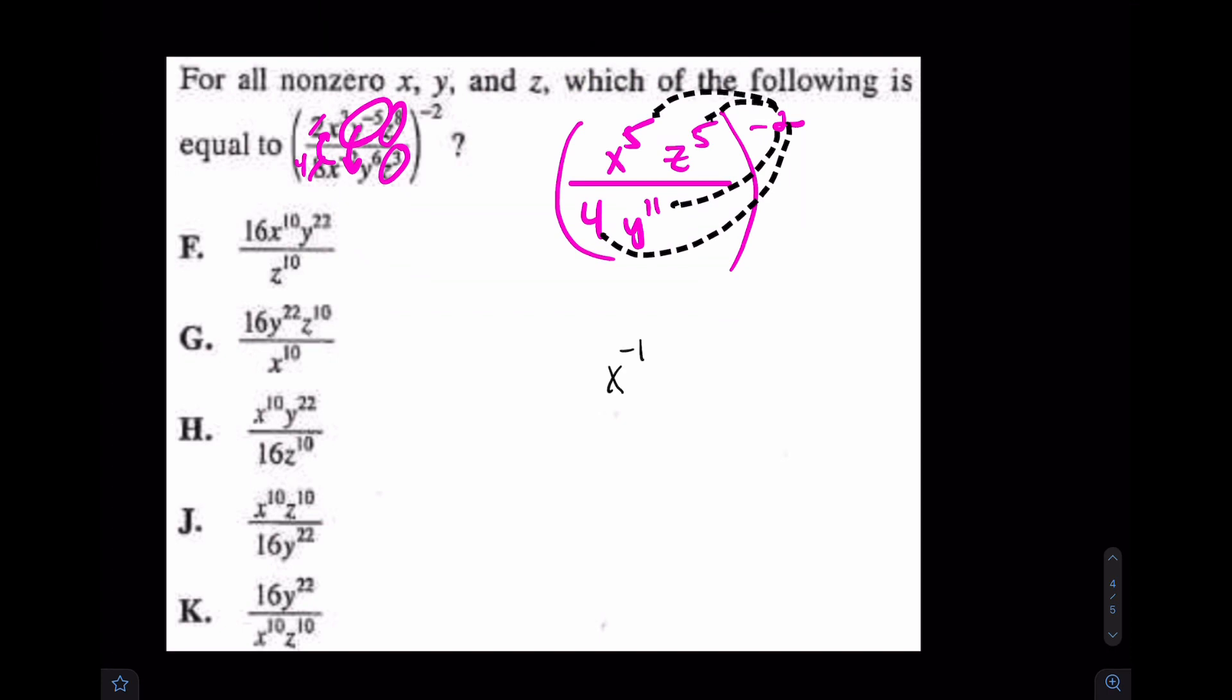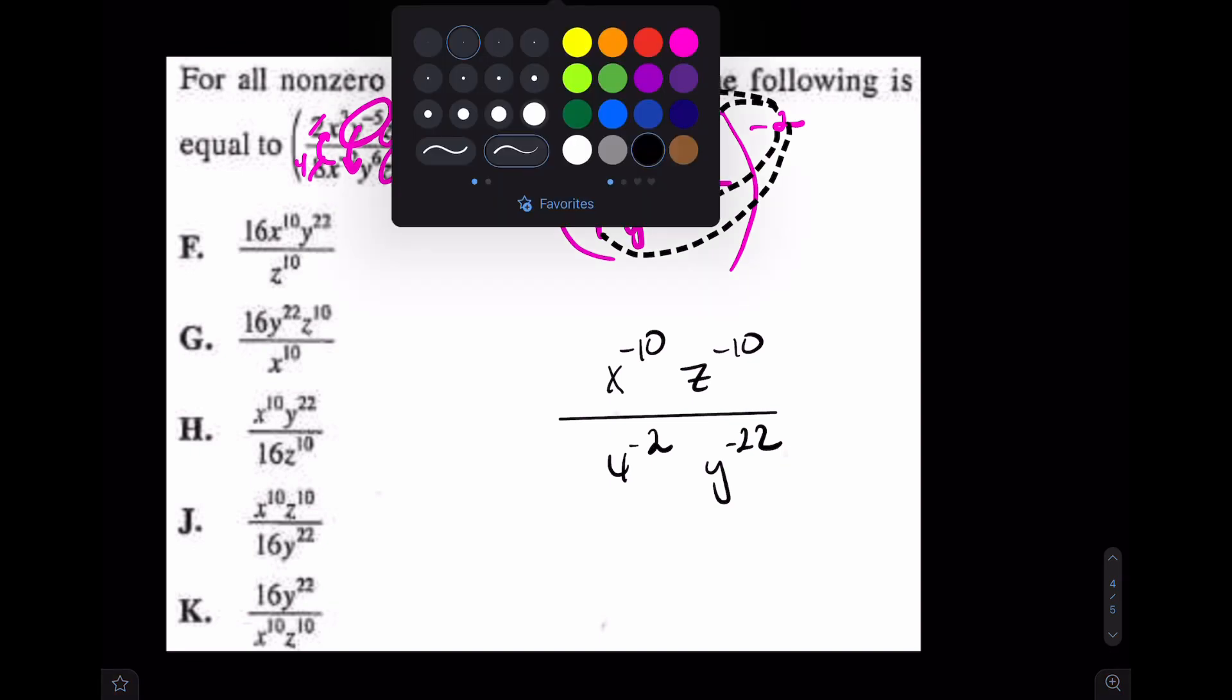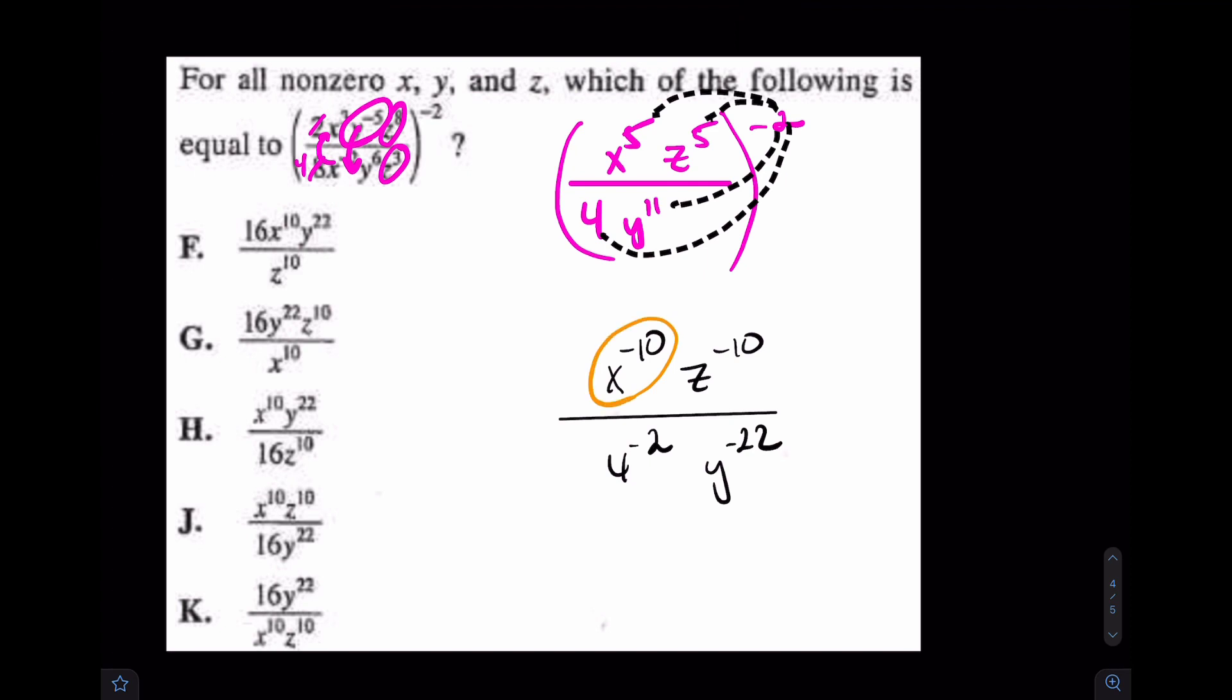So let's see what happens. I have x to the negative 10th, z to the negative 10th, all over 4 to the negative 2nd, y to the negative 22nd. And now we're just about done. As soon as we realize that, again, this negative power in the top will go to the bottom. This negative power in the top will go to the bottom. These negative powers in the bottom will both go to the top. Your final answer is k.